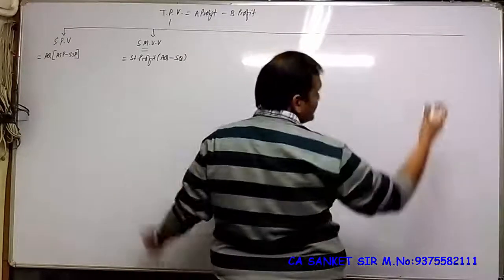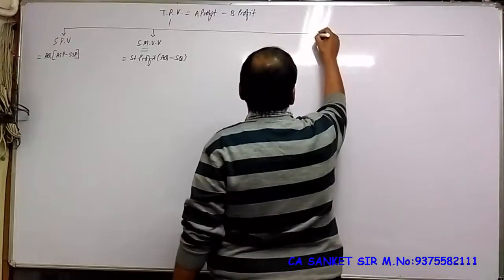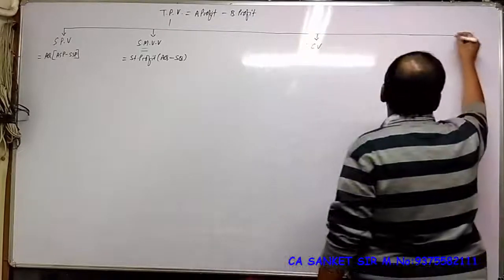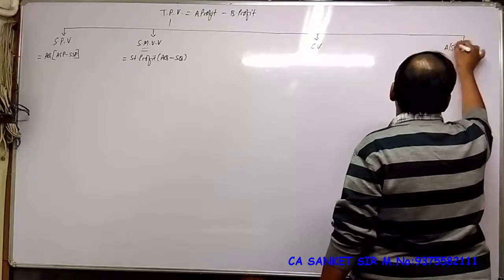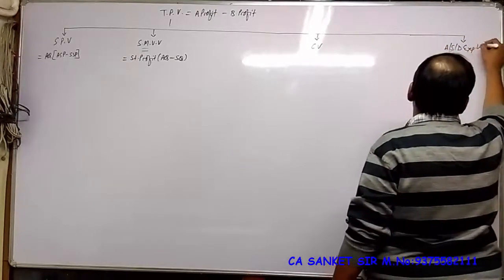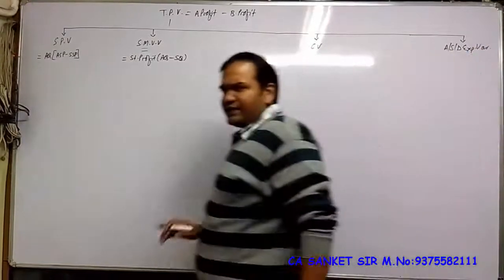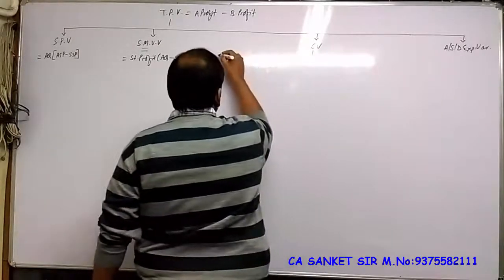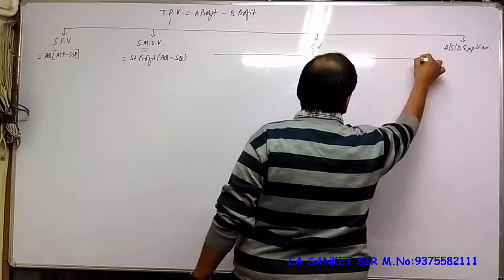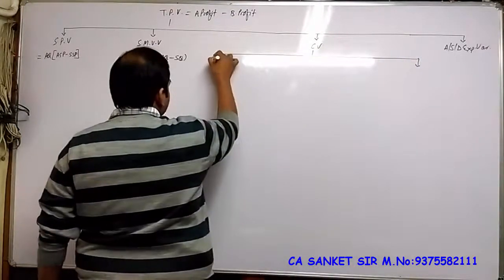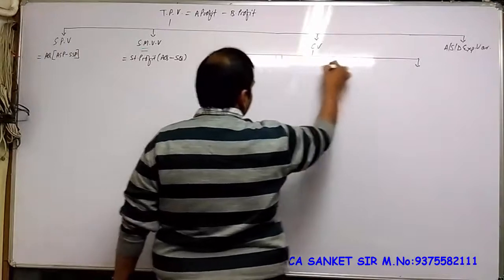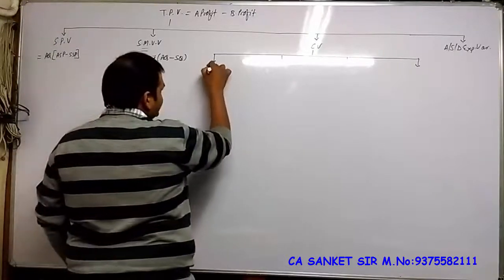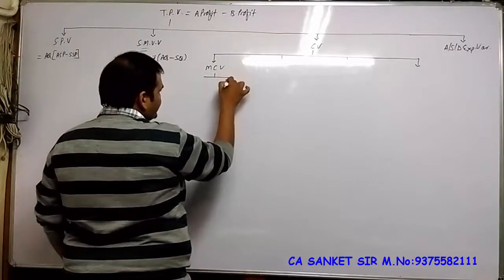Cost is now split into two parts: one is Total Cost Variance, and another is Admin, Selling and Distribution Expenditure Variance — this one is rarely seen. Under Cost Variance we have studied: Material, Labor, Variable Overhead, and Fixed Overhead. The first was Material Cost Variance.